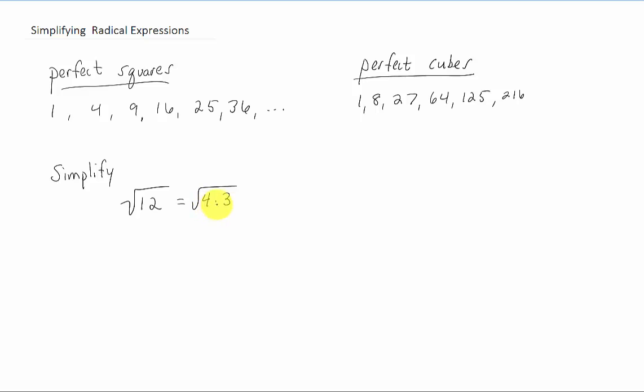And as it turns out, if we have multiplication under a radical, we can split that radical up into two pieces. And since we have the square root of a perfect square here, we can just write this piece as two and leave the square root of three.